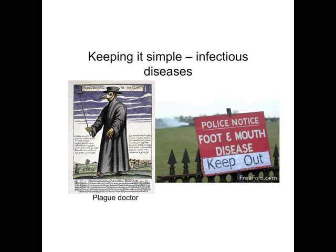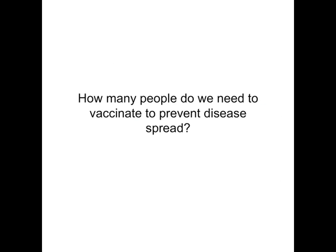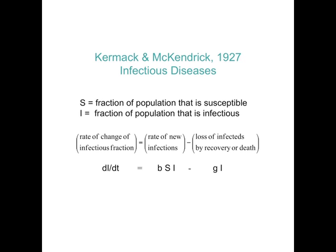So what's the question we're going to try and answer this time? How many people do we need to vaccinate if we want to prevent a disease from spreading? If we have a vaccine, how many should we try and get? It's an important question. The mathematical theory behind this goes back to the 1920s, to Kermack and McKendrick, and they had a model for infectious diseases - a simple model.